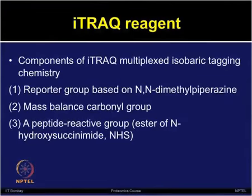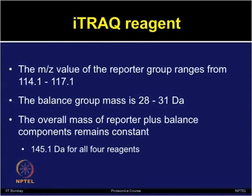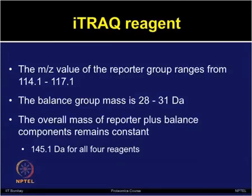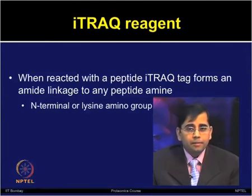There are 3 major components of the iTRAQ reagent. One is the reporter group based on NN-dimethylpiperazine (DMP). Second is a mass balance carbonyl group, and third is a peptide reactive group which is an ester of N-hydroxysuccinimide (NHS). The mass-to-charge value of the reporter groups ranges from 114.1 to 117.1 for the 4-plex reagent. The balancer group mass is 28 to 31 Dalton, while the overall mass of reporter plus balancer components remains constant at 145.1 Dalton for all 4 reagents. When reacted with a peptide, the iTRAQ tag forms an amide linkage to any peptide amine — N-terminal or lysine amino group.